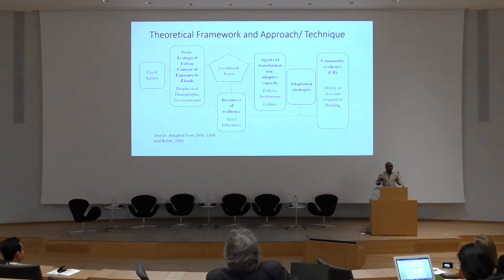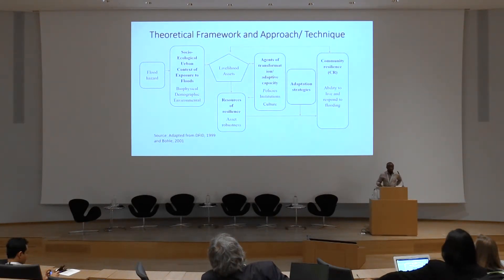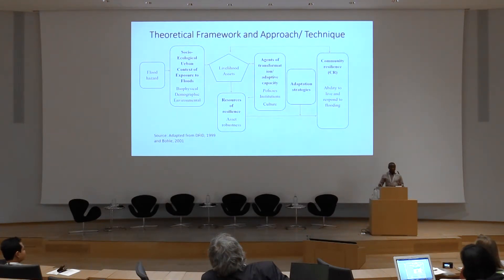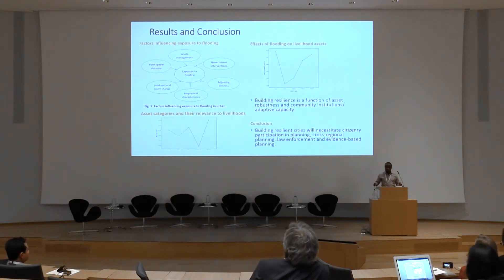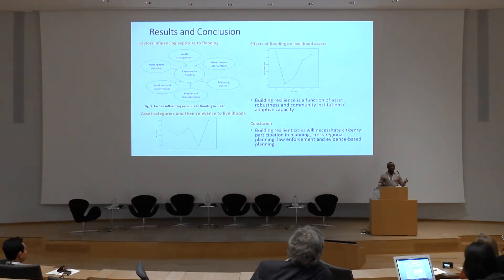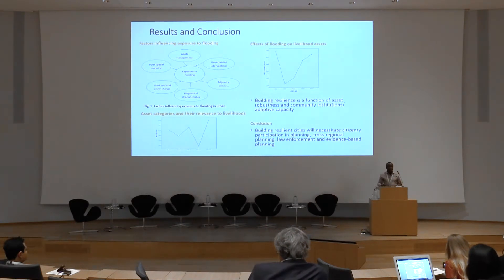This is the general framework I used in doing the studies. It's mainly adopted from the sustainable livelihoods approach, looking at the urban context, how it's exposed to flooding by way of biophysical characteristics, and how urban assets are used in building resilience. I used a tool called the community-based risk assessment to adaptation and livelihoods, which enables you to interact with the community and bring out the issues that affect them — the risks that assets are exposed to, and how they build resilience at the community level.